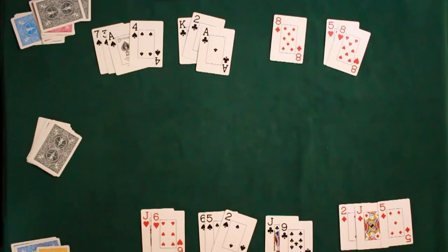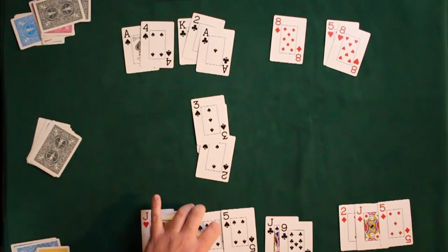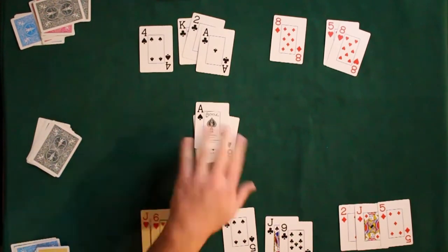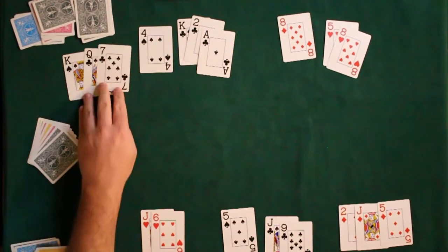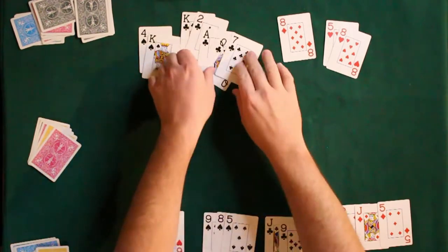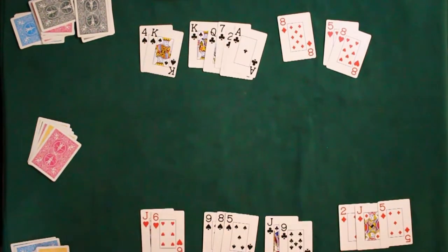Once the trick is played and won, you'll redraw back to 10 cards and the game will continue with the previous trick winner leading the next trick.